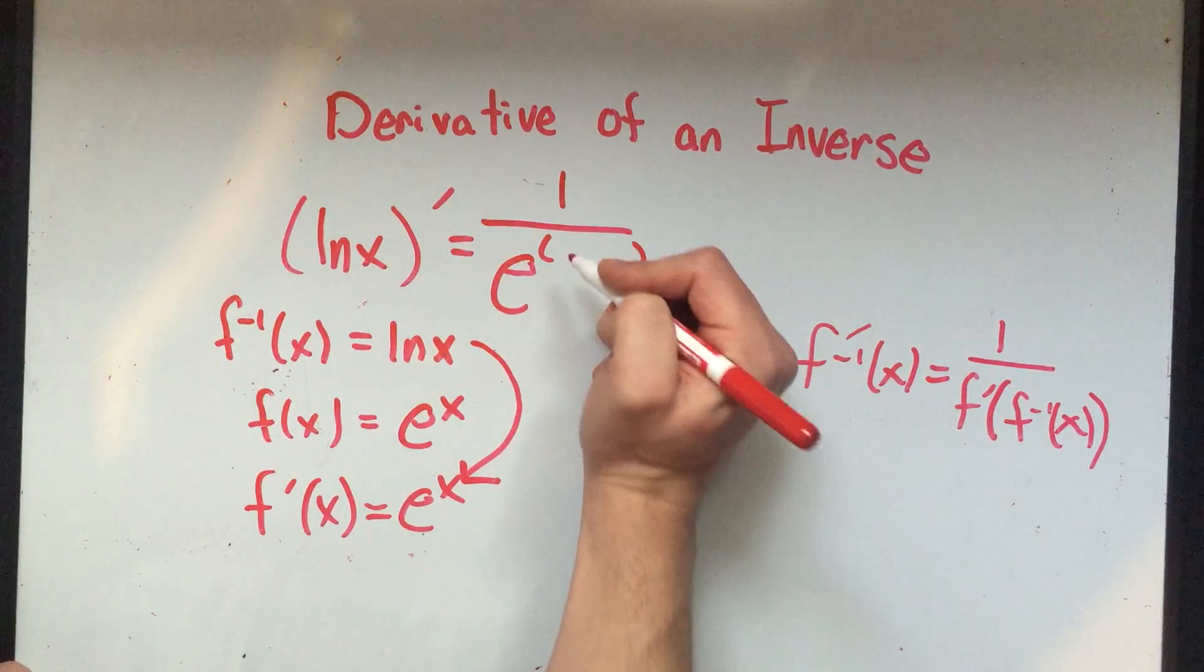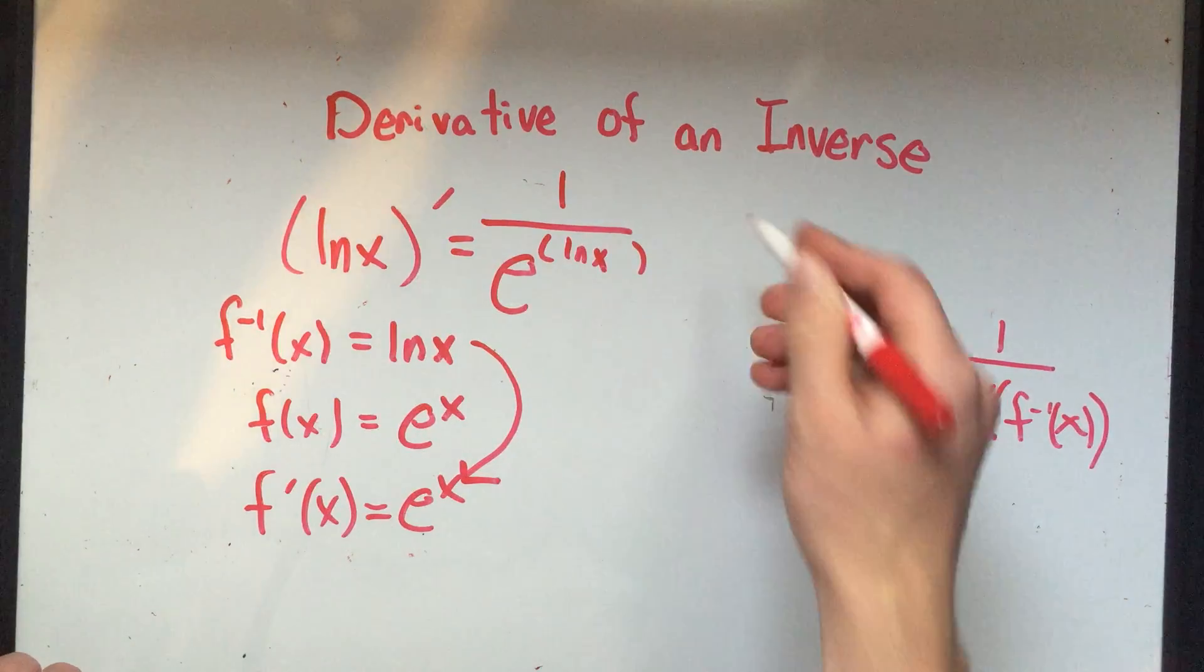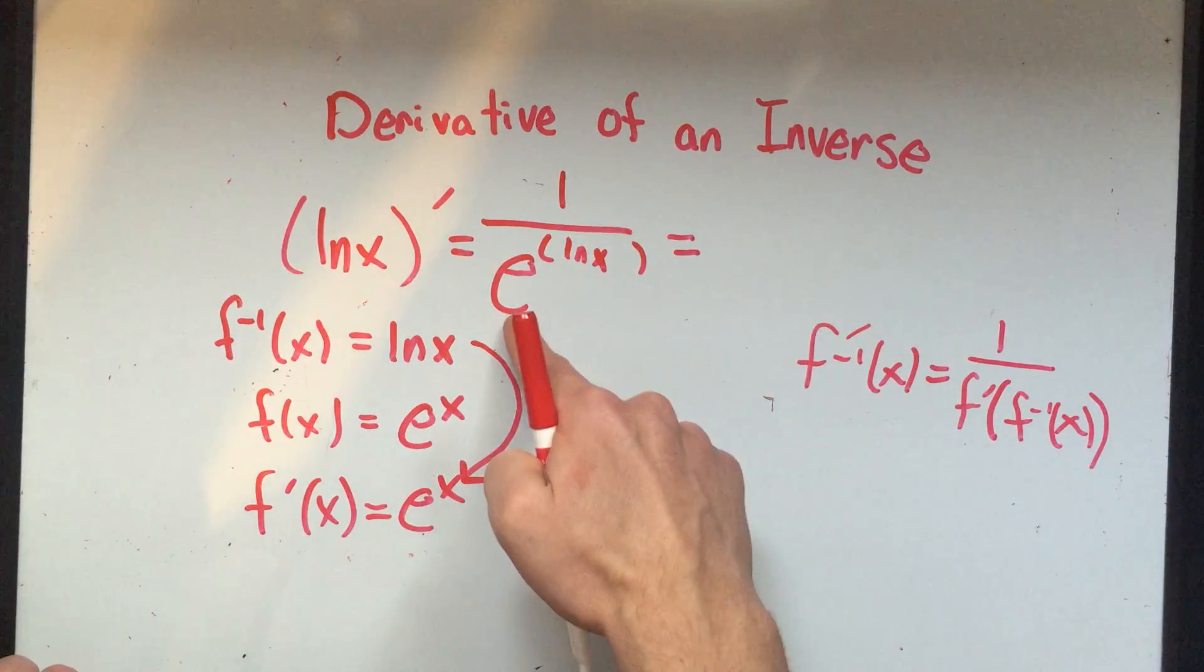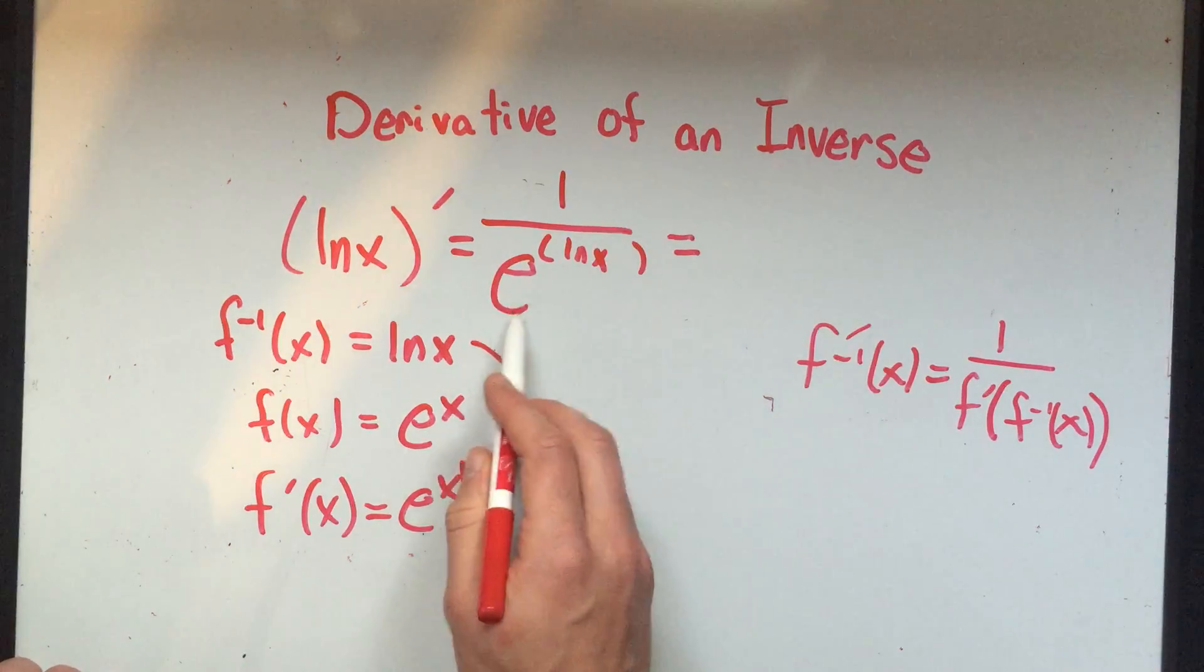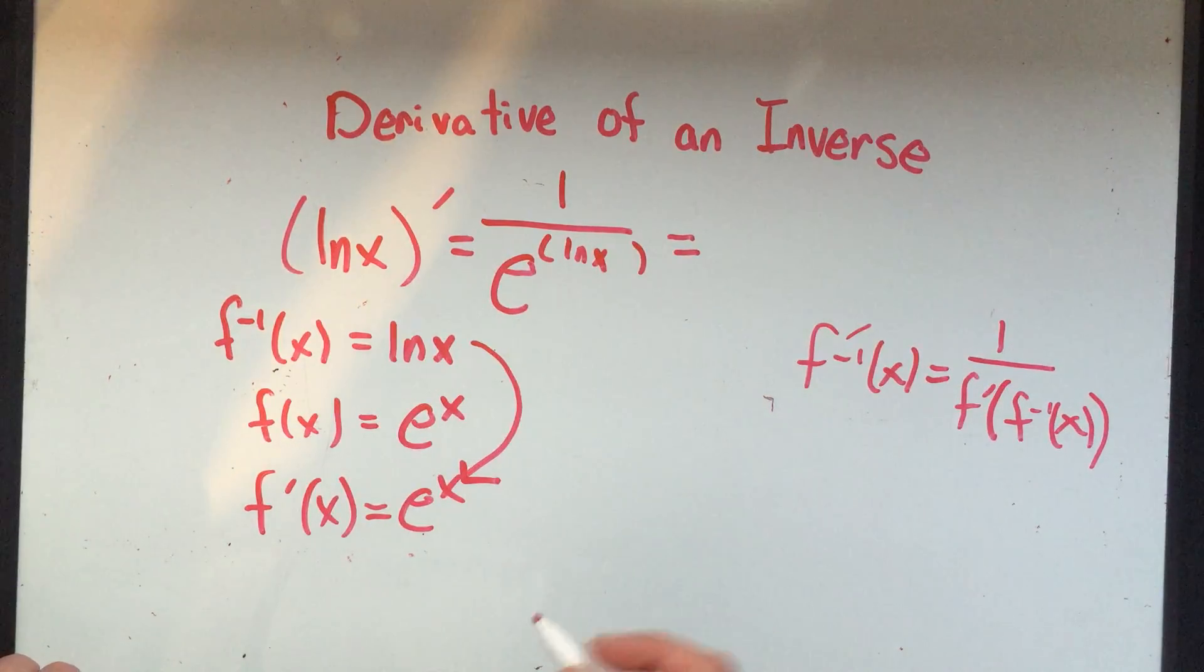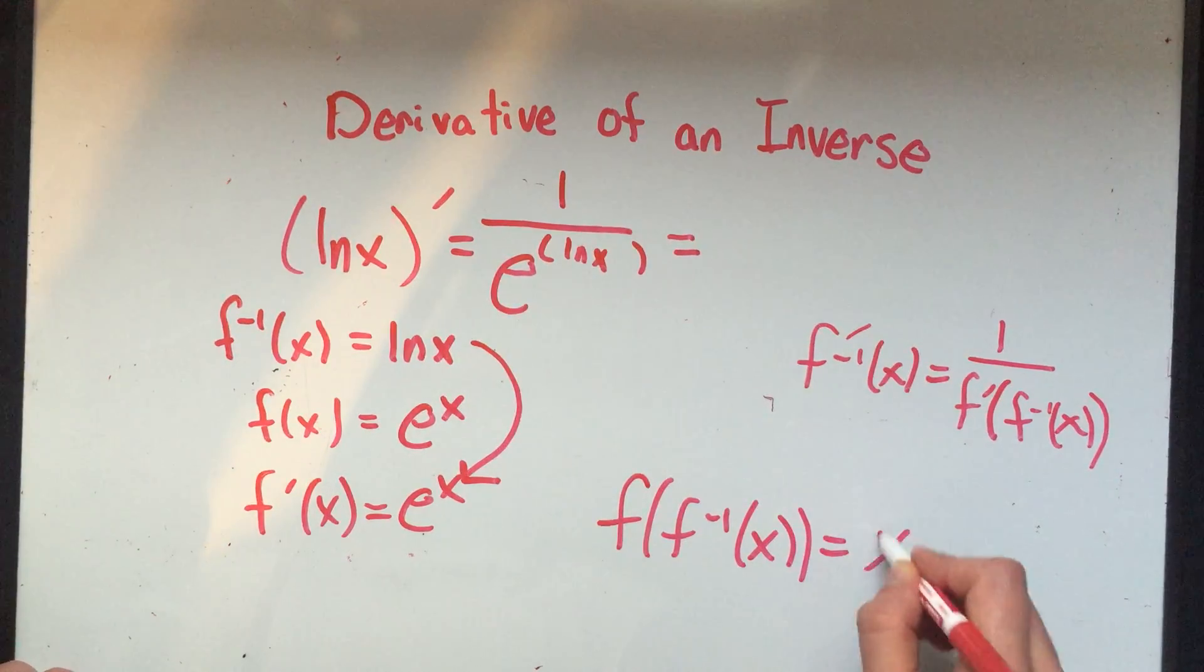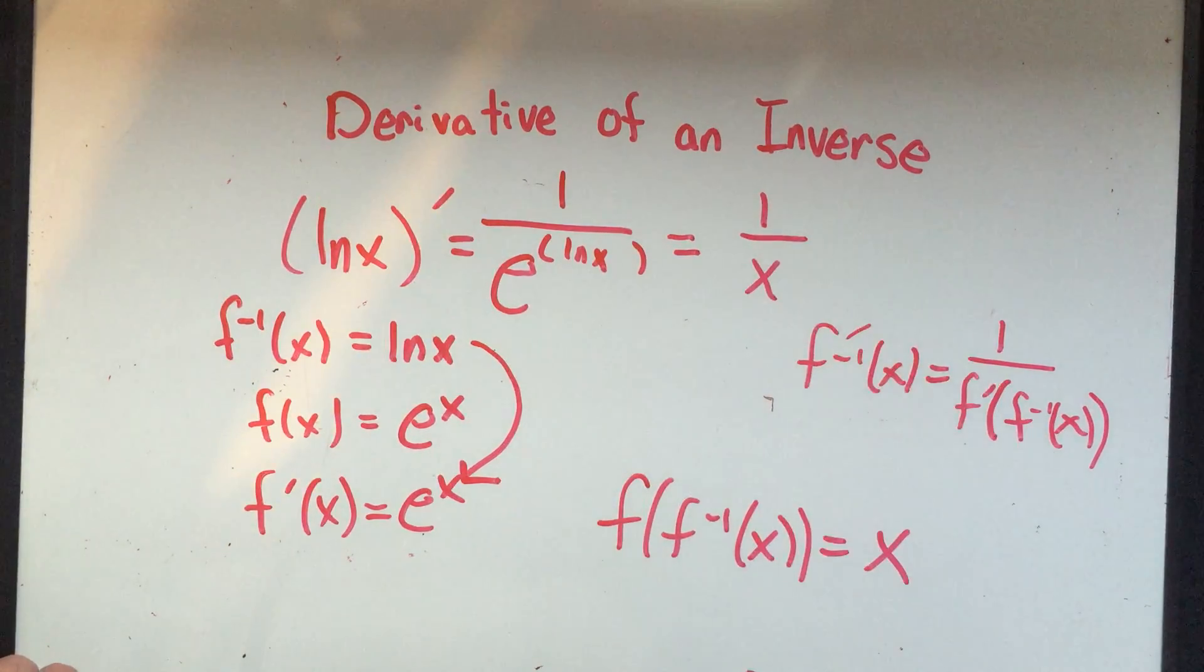So now this is e to the ln of x. And properties of logarithm says that e to the ln cancels. Those are inverse functions. Actually, e to the ln of x is exactly what I had before - if I've got f of f inverse of x, that's just x. So this is just 1 over x. The derivative of ln of x is 1 over x.